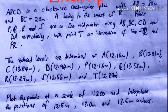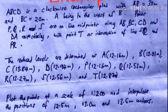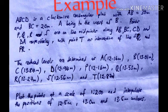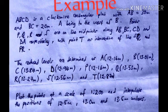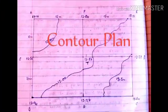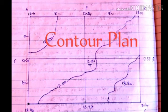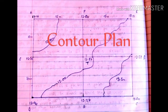The reduced levels are determined as seen below. We are required to plot the points at a scale of 1 to 200 and interpolate the positions of 12.5 meter, 13 meter, and 13.5 meter contours. Using the 12.5 meter contour, I'm going to explain how you can draw a contour plan.